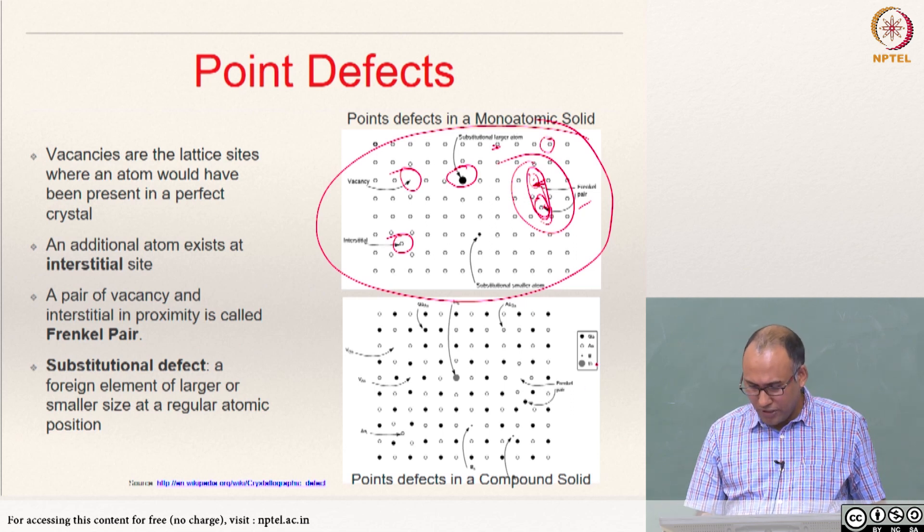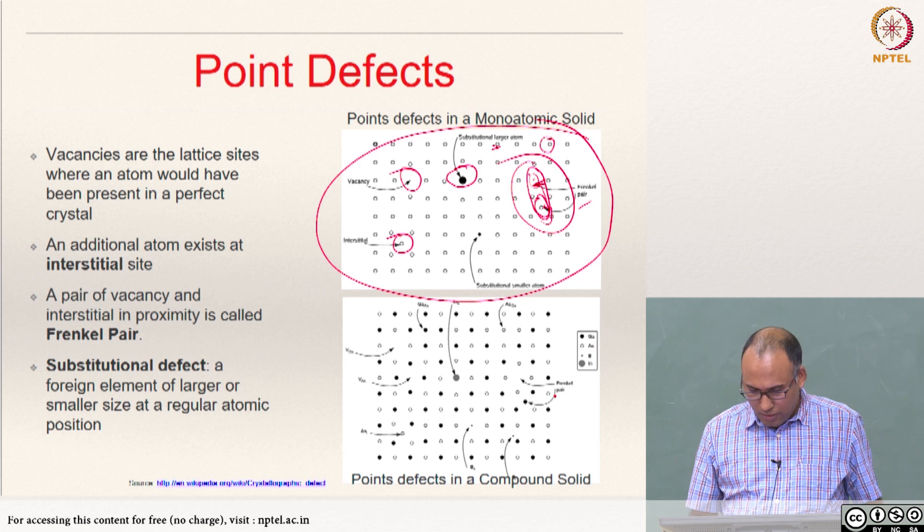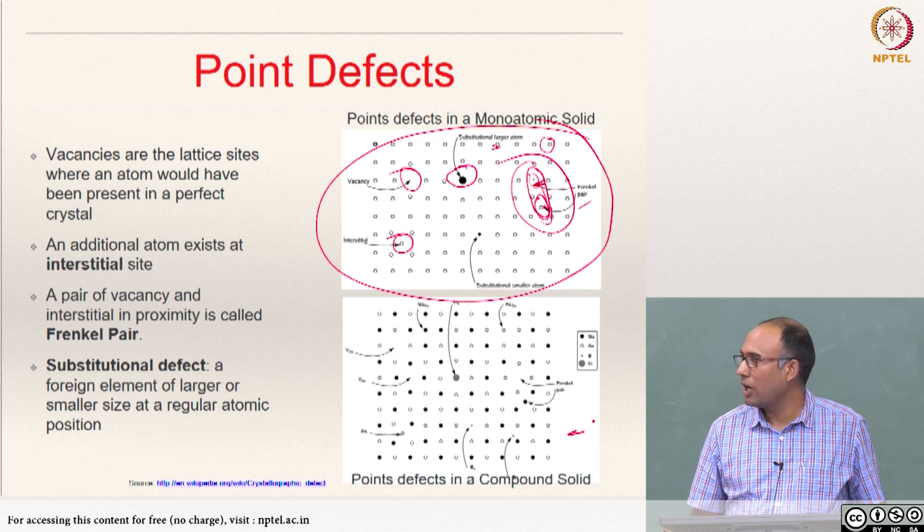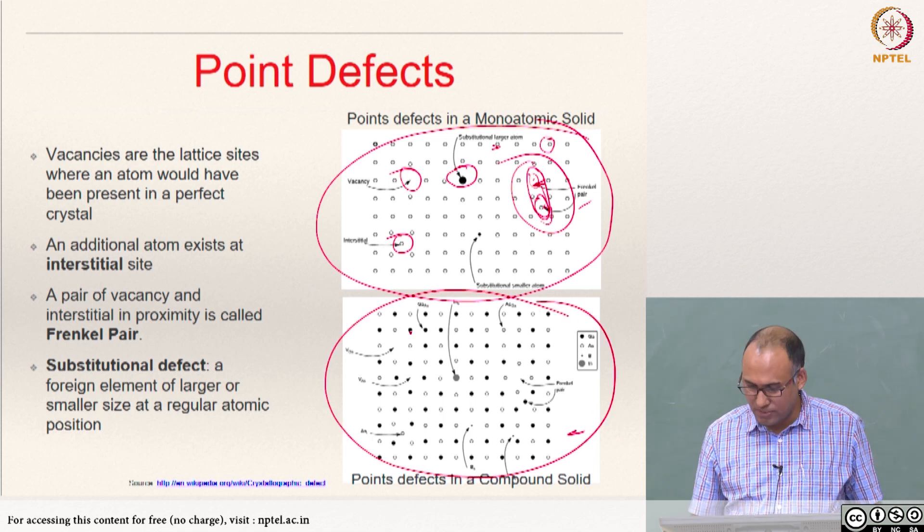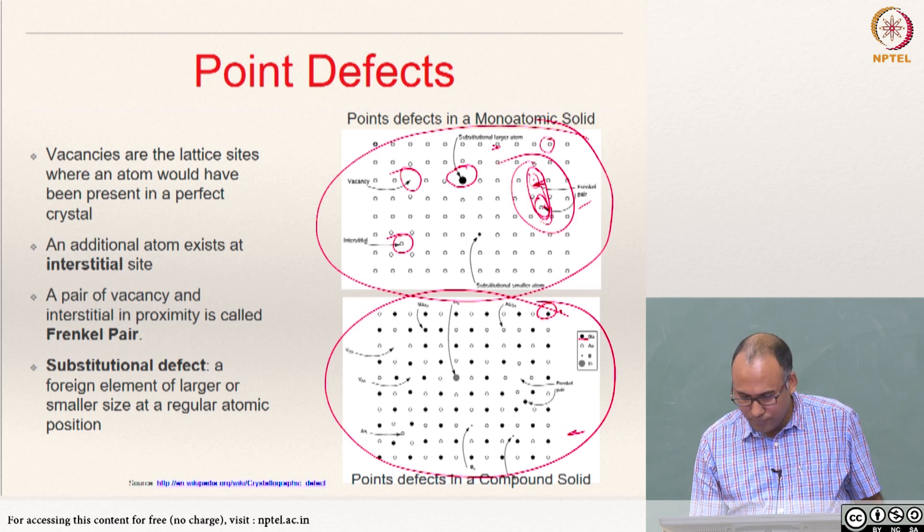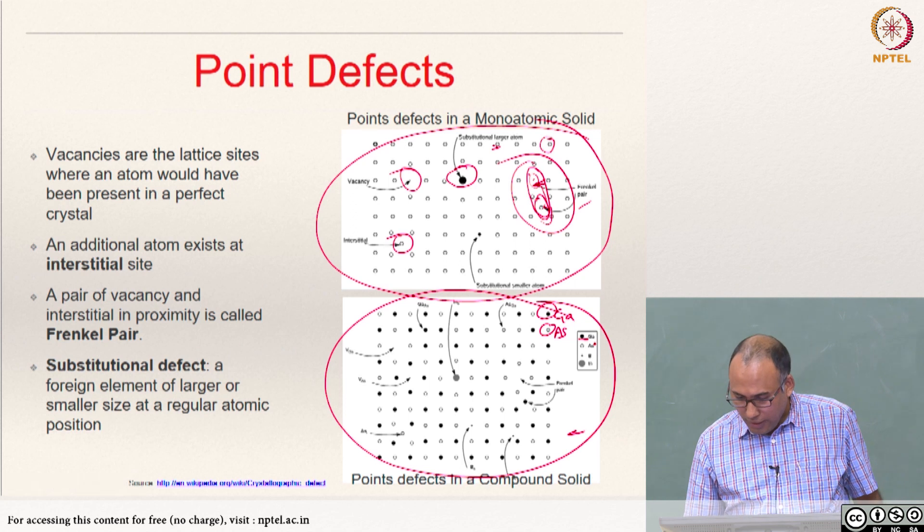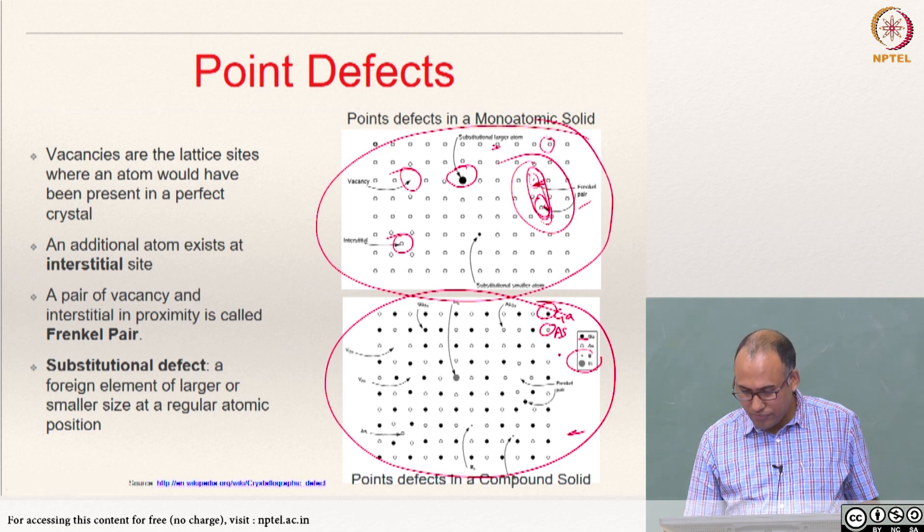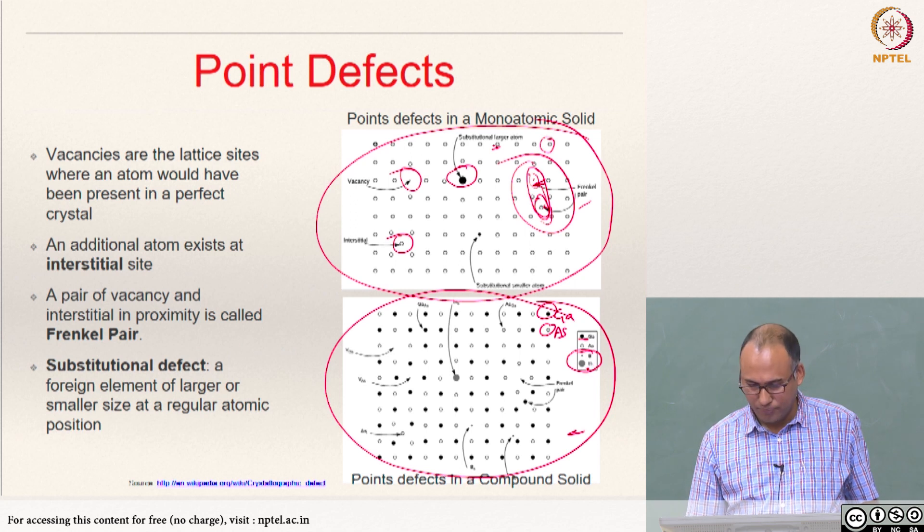This is a gallium arsenic system. What we see here is a gallium arsenic system. The black dots are gallium and this is arsenic. And then in that you have impurities of boron and indium.